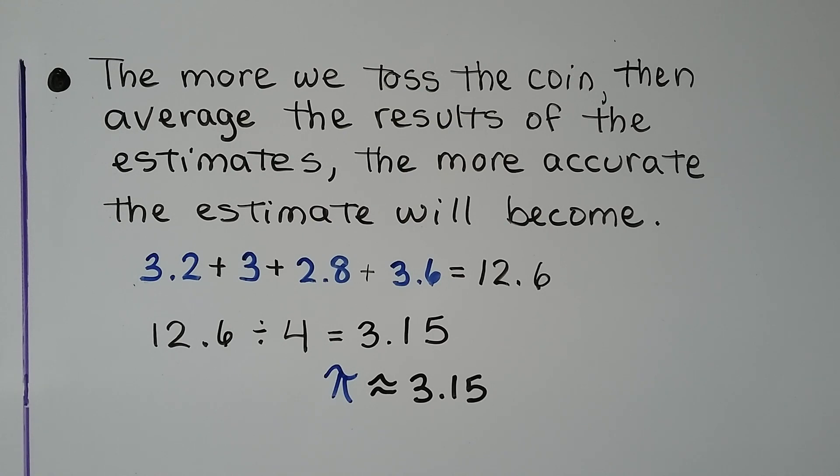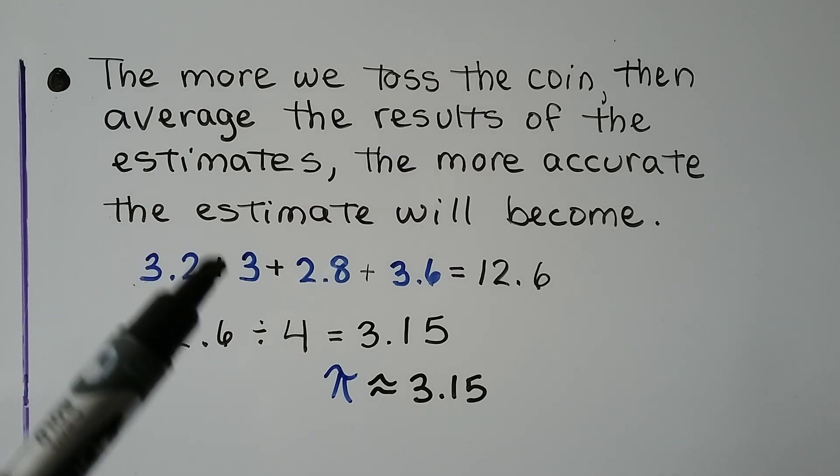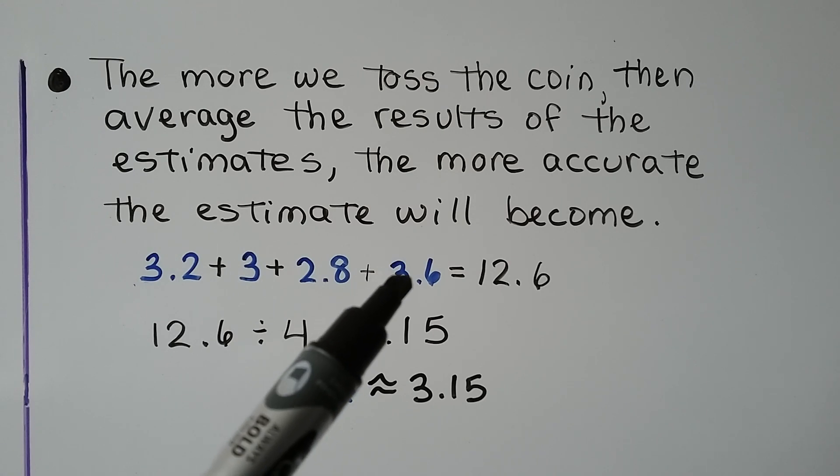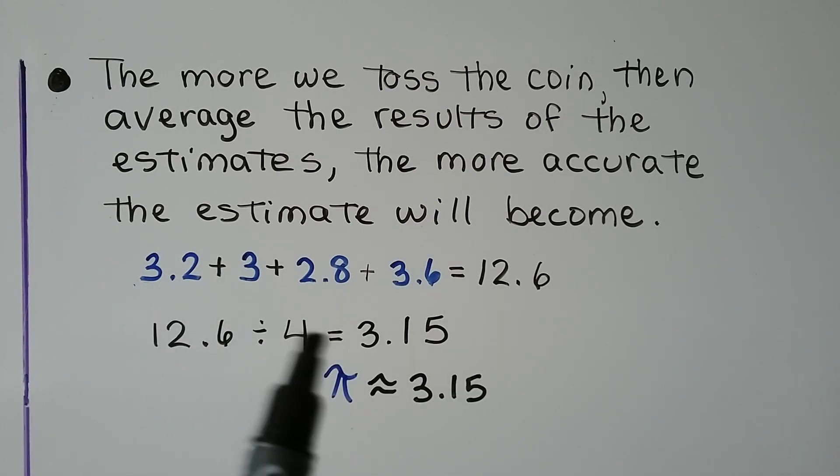The more we toss the coin and run this experiment, then average the results of the estimates, the more accurate the estimate will become. So let's say we threw it twenty times and we got three point two to estimate pi, then we got a three, then we got two point eight, then we got three point six. We find the average by taking our amounts, adding them up, and then dividing by how many we added together. So we'd have twelve point six divided by four, which says pi is approximately three point one five, which is really close to the approximation of pi. And the more we do it, the better our estimate will become.